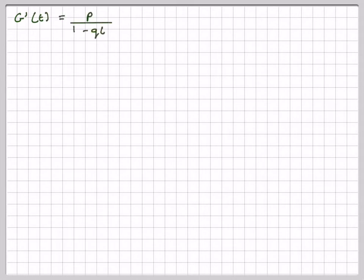For the variance, we're going to need to work out G''(1). So G'(t) is p over (1-qt)², so it's going to become p times (1-qt)^(-2), taking this up here.